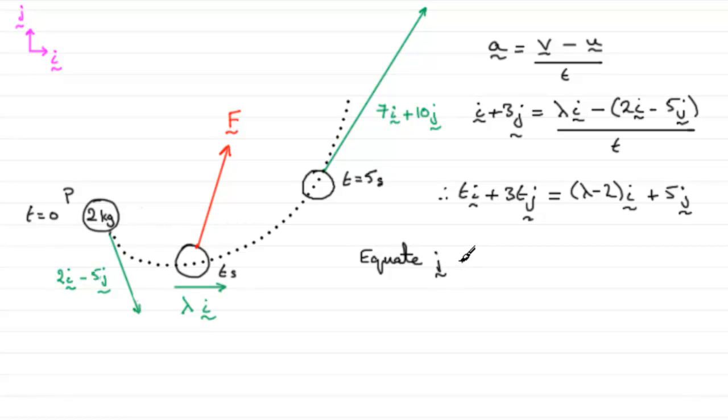And it's the j components that we can equate to one another. So if we equate the j components, then what we have is that 3t must equal the 5. So therefore, 3t equals 5.